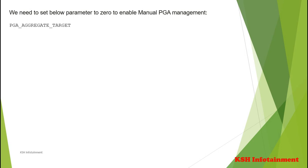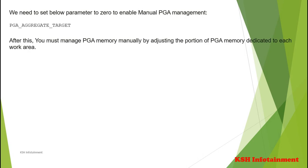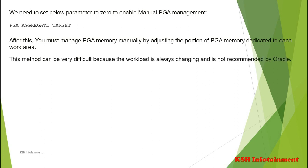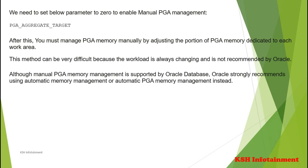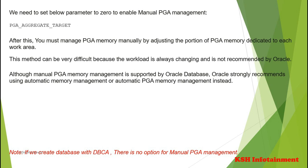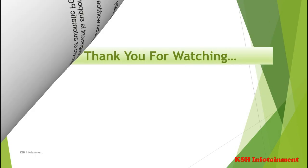To enable Manual PGA management, set pga_aggregate_target to 0. After this, you must manage PGA memory manually by adjusting the portion of PGA memory dedicated to each work area. This method can be very difficult because the workload is always changing and is not recommended by Oracle. Although manual PGA memory management is supported, Oracle strongly recommends using Automatic Memory Management or Automatic PGA memory management instead. Note that if you create a database with DBCA, there is no option for Manual PGA management. Thank you for watching.